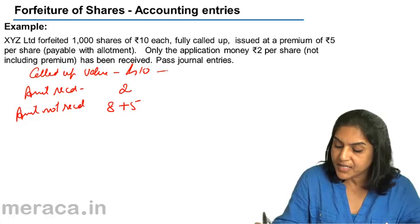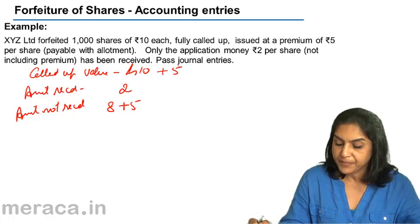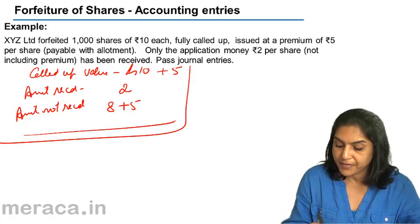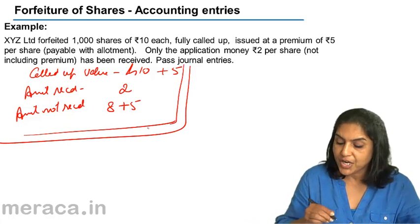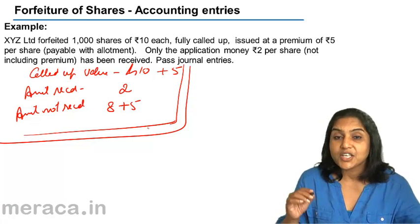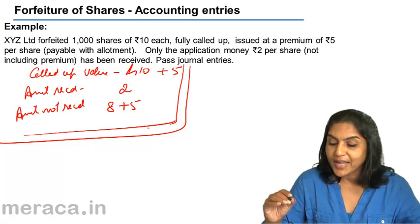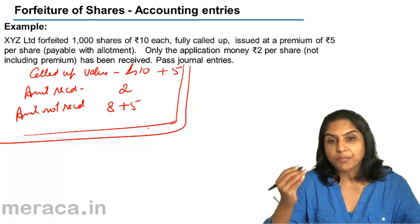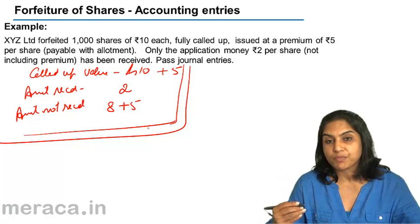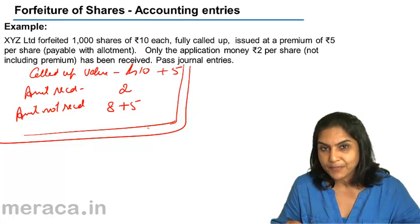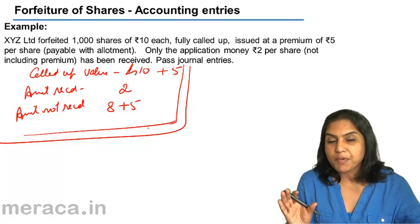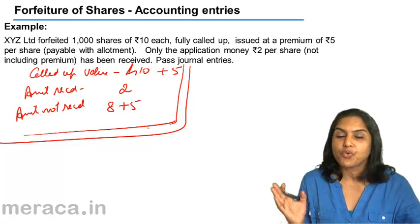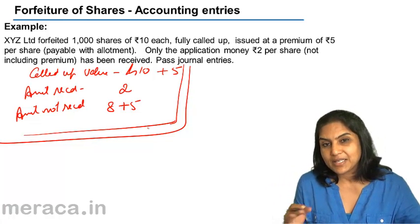The called-up value is rupees 10 and the premium is rupees 5. The amount not received is actually 8 plus 5. When the shares were allotted, the entry passed would have been: Share Allotment Account debit; to Securities Premium; to Share Capital. This securities premium which we credited — we have not received this money, and therefore now we are going to debit it, write it back.